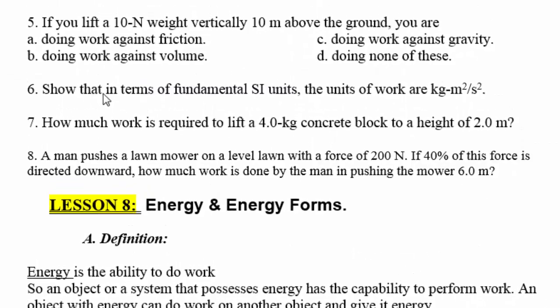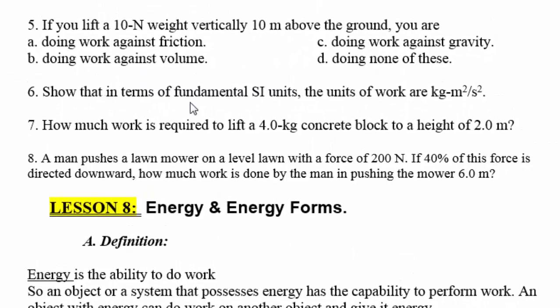Question six: show that in terms of fundamental SI units, the units of work are kilogram·meter² per second squared. Remember, work is force times distance. The unit of force — the Newton — represents kilogram·meter per second squared, because the unit of force equals unit of mass times unit of acceleration.